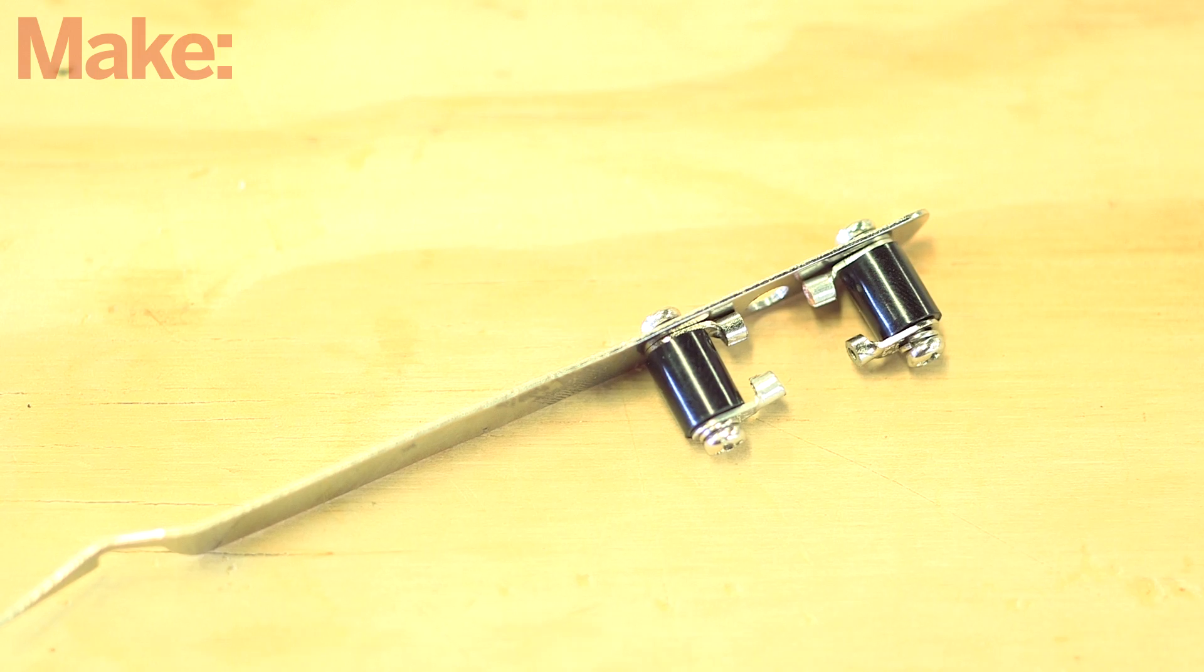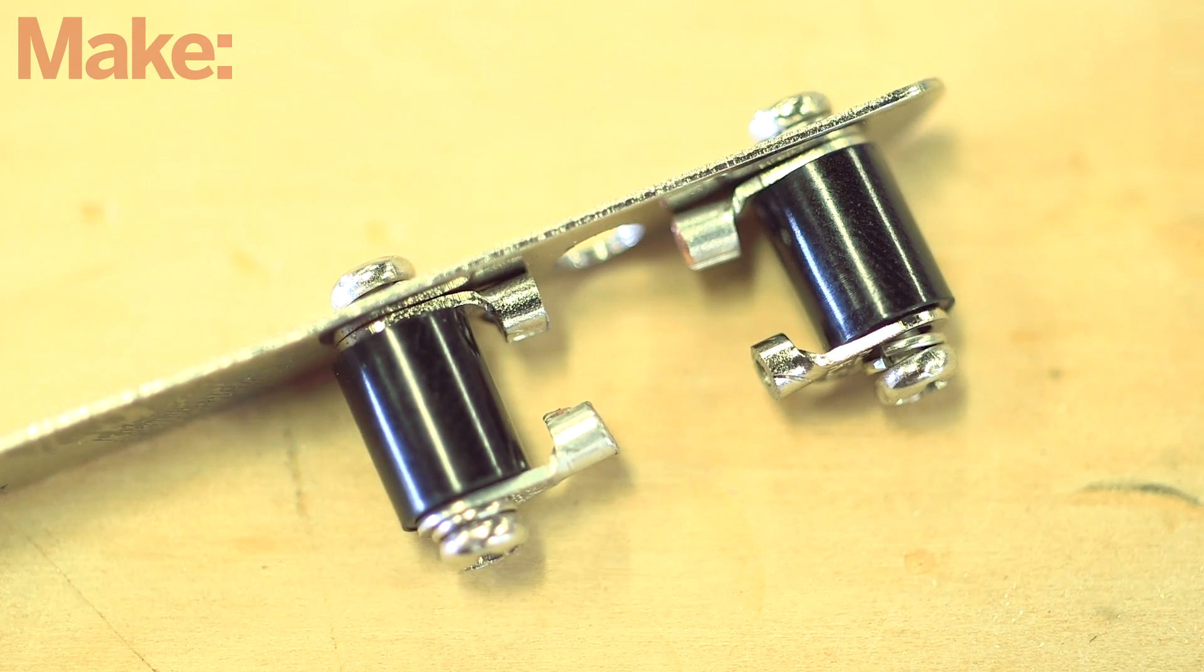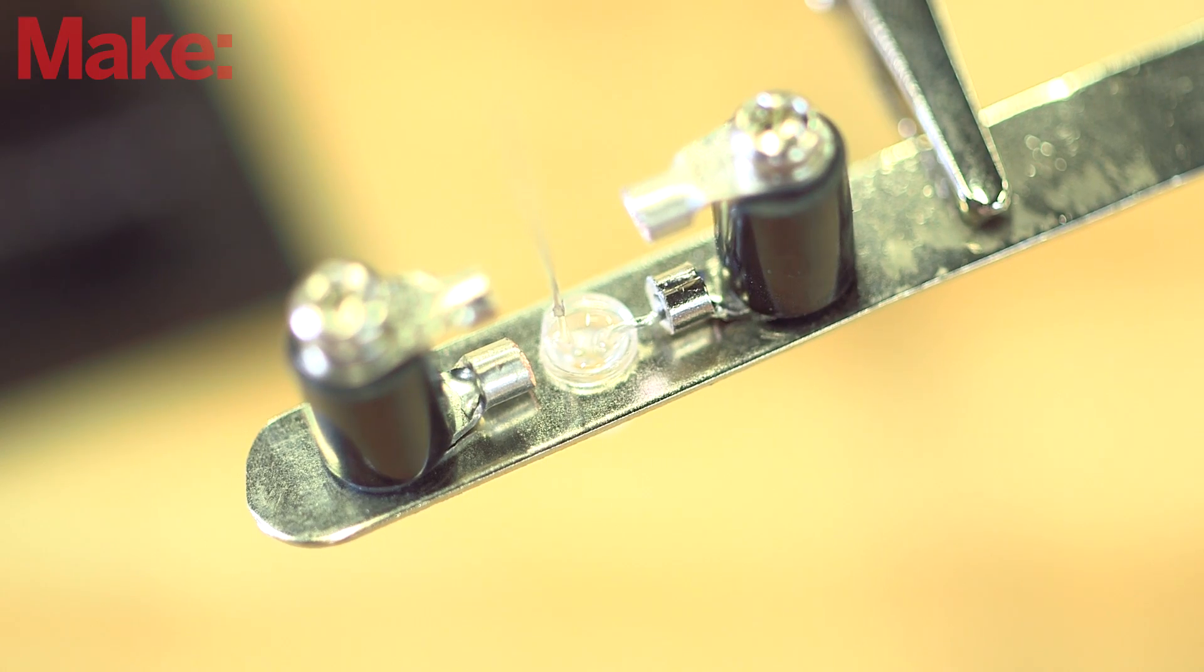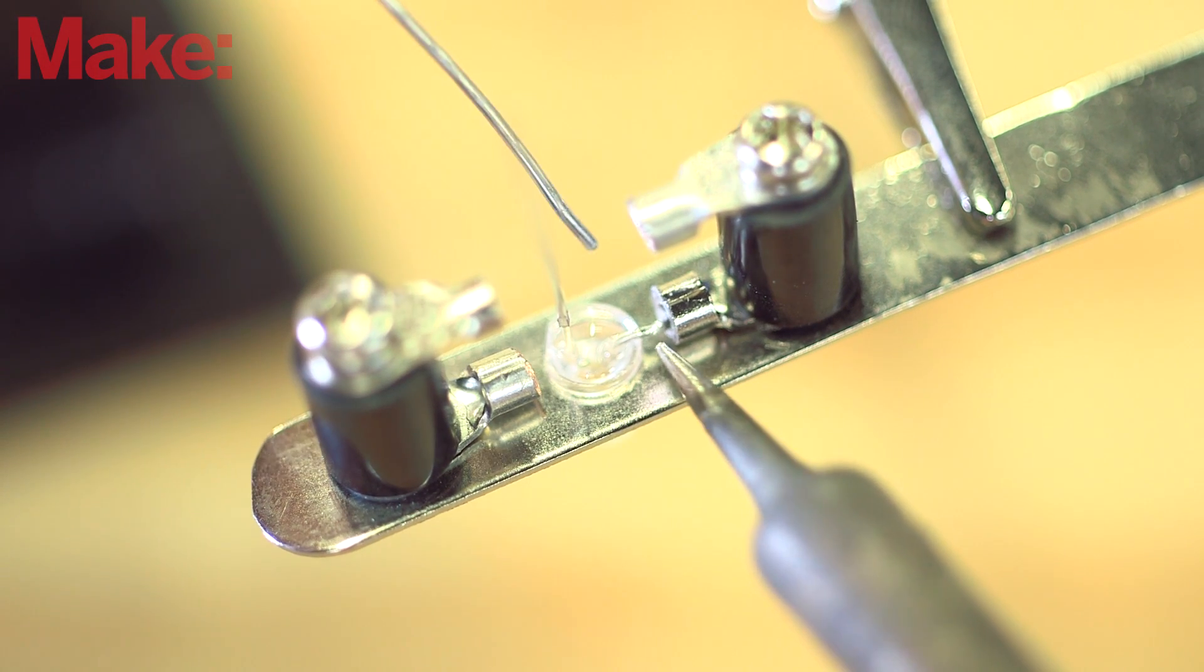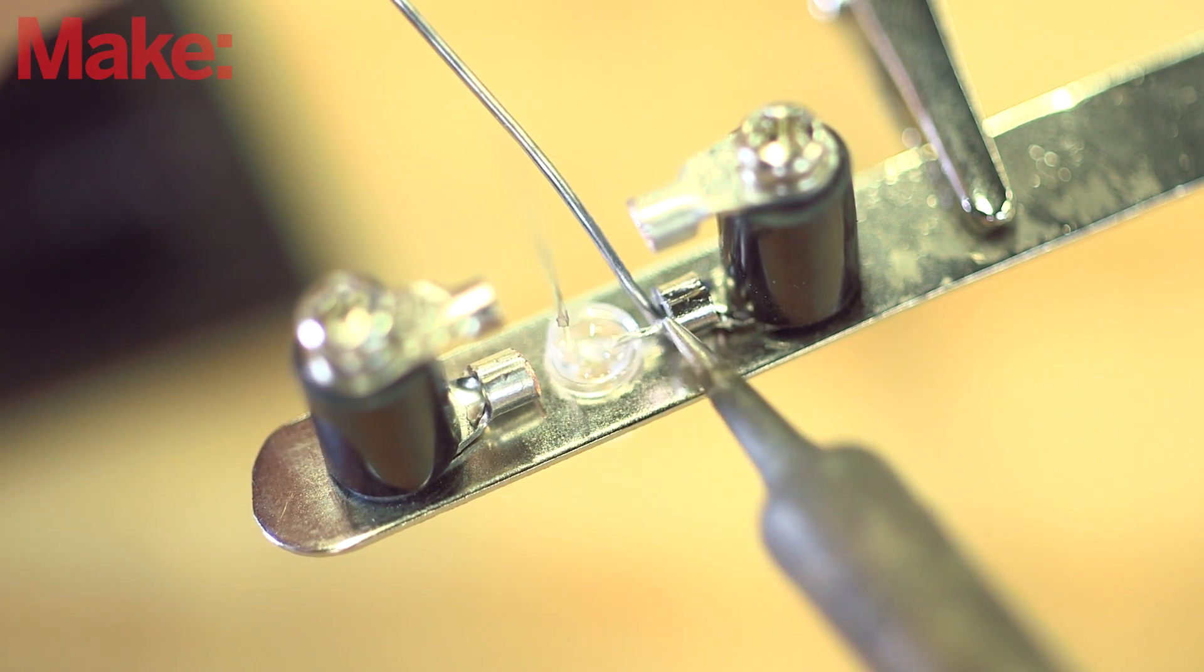Assemble one of the jaws, two standoffs, four ring tongues, and four standoff screws as shown. Trim the long lead on one of your LEDs so that it will fit into the ring tongue once it is seated in the center hole in the jaw. Once everything is in place, solder the connection.